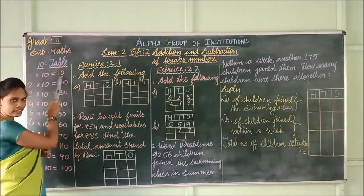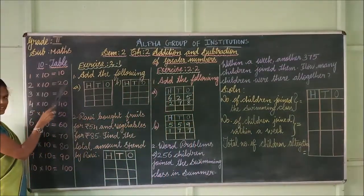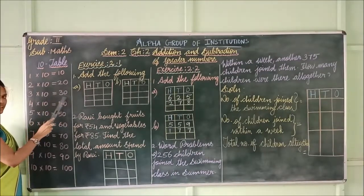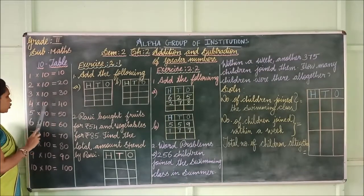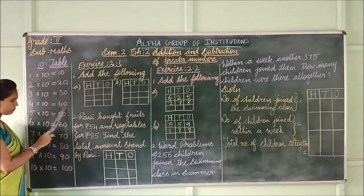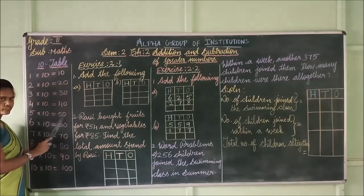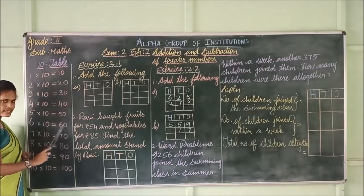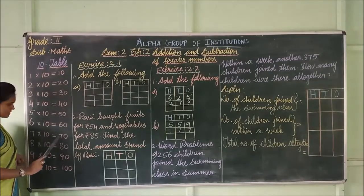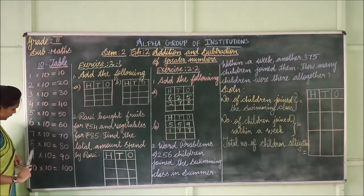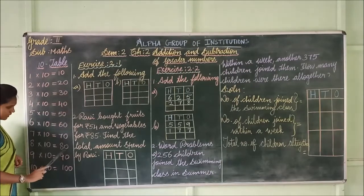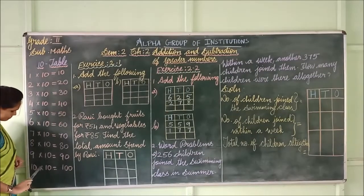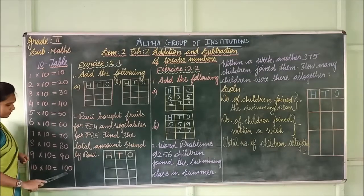One 10 is 10. Two 10s are 20. Three 10s are 30. Four 10s are 40. Five 10s are 50. Six 10s are 60. Seven 10s are 70. Eight 10s are 80. Nine 10s are 90. Ten 10s are 100.